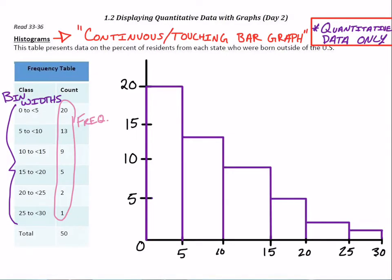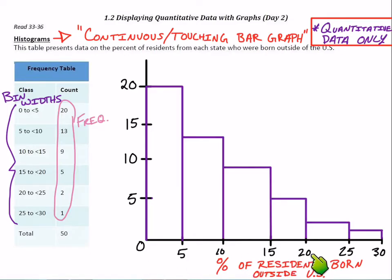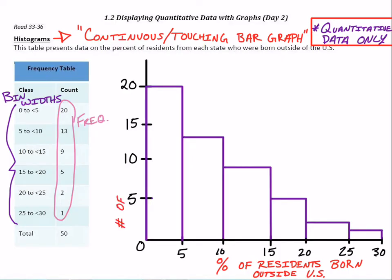Great histogram, but to someone looking at it, it lacks a lot of context. So let's label the axes. Starting with the x-axis: the 0, 5, 10, 15, 20, 25, 30 represents these percentages — that's the percent of residents born outside the U.S. And the y-axis is our frequency — the count or the number of states within each of the bins.